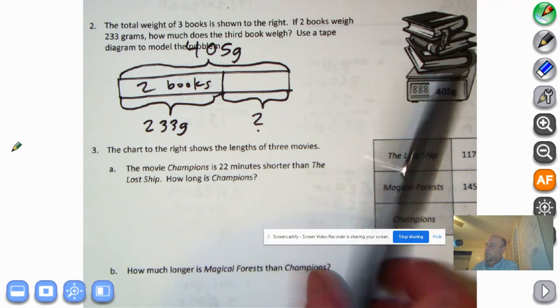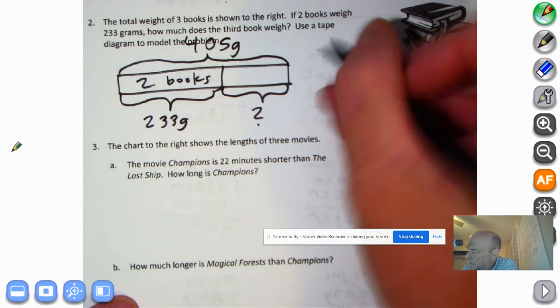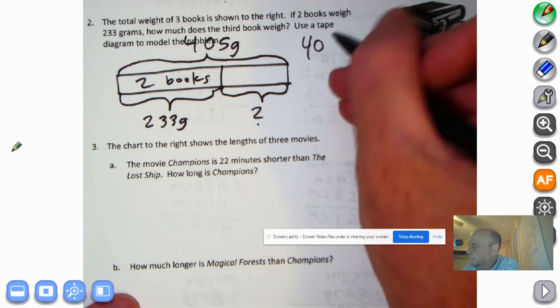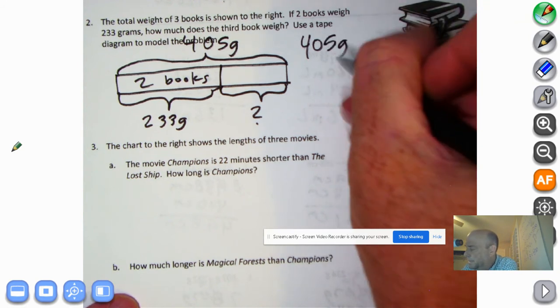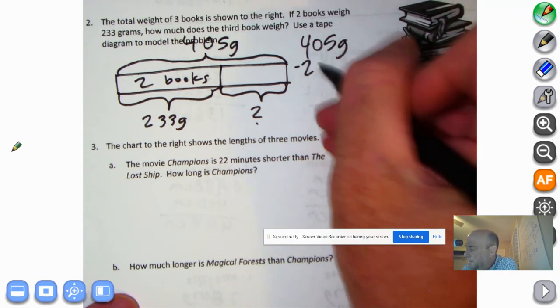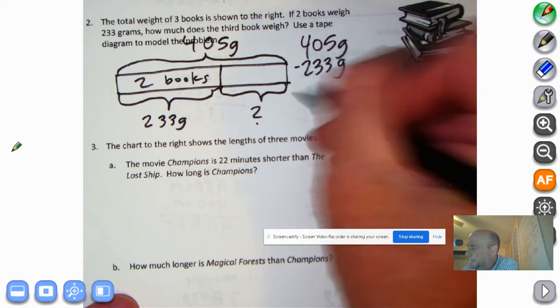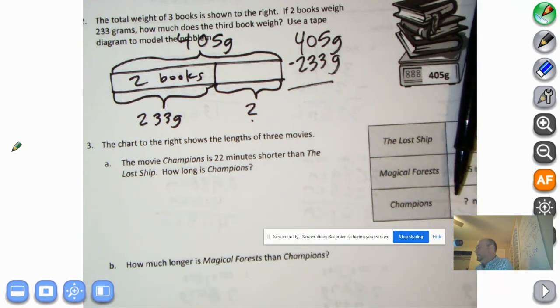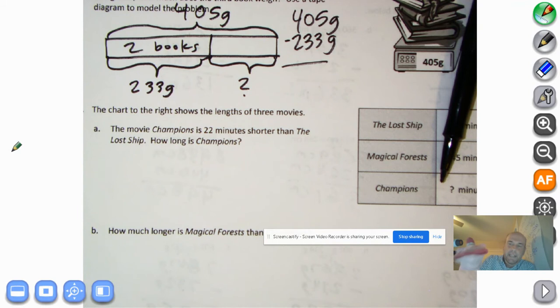So how do we determine what's here? Well, we do a little subtraction. The minuend is 405 grams. Then we'll subtract 233 grams. And now it is time to pause so you can try to figure this problem out on your very own. So pause the recording.